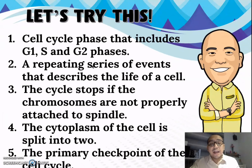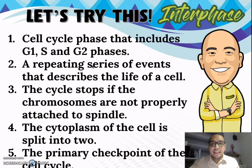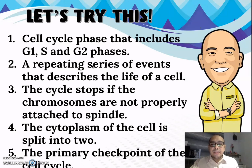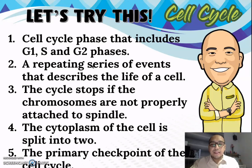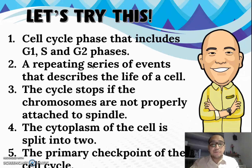Let's answer a simple activity — identify what is being described in the following statements. First: the cell cycle phase that includes G1, S, and G2 phases — that is interphase. Second: a repeating series of events that describes the life of a cell — that is the cell cycle. Third: the cycle stops if chromosomes are not properly attached to the spindle — that is the M checkpoint.